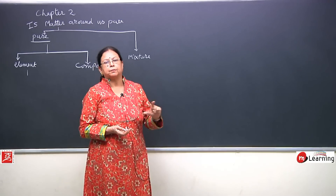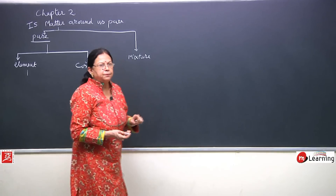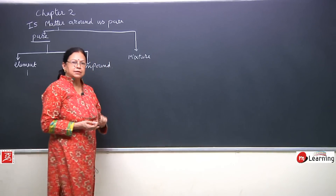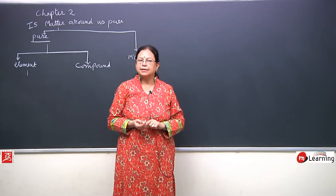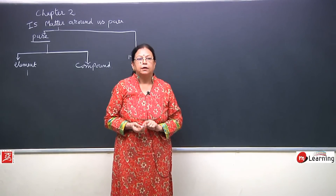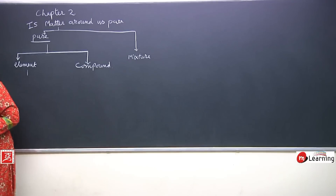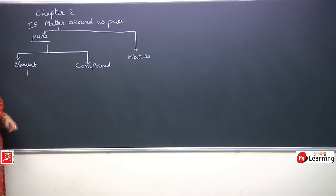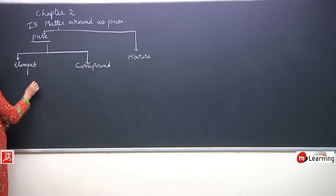So, all these are the properties or characteristics of a pure substance. A pure substance is one which has a fixed melting point, a fixed boiling point, and its density is also fixed or defined.